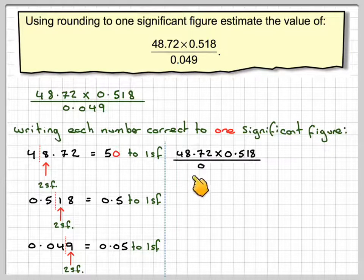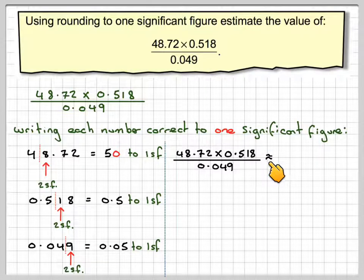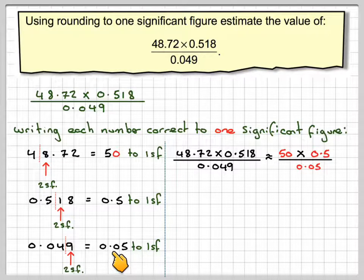So now going back to our calculation, 48.72 times 0.518 divided by 0.049, this is approximately equal to 50 times 0.5 divided by 0.05.